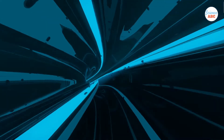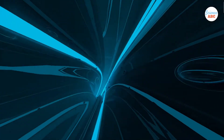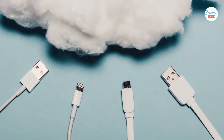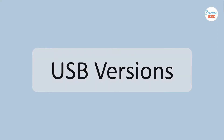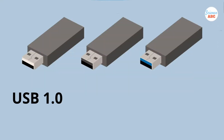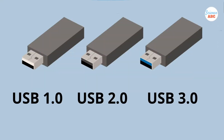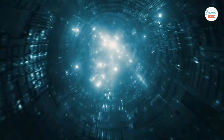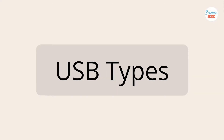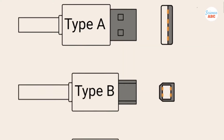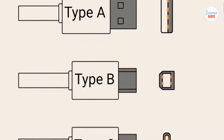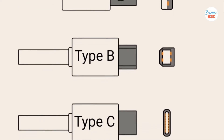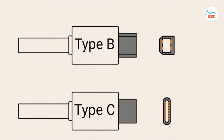As is the case with other IT technologies, USB cables have evolved over time and therefore have many variants. The different versions of USB cables, including USB 1.0, 2.0, and 3.0, denote the functionality and speed of the USB cable. On the other hand, the type of USB cable, such as USB Type A, Type B, and Type C, refers to the physical design of the plugs and ports found at the ends of the USB cable.